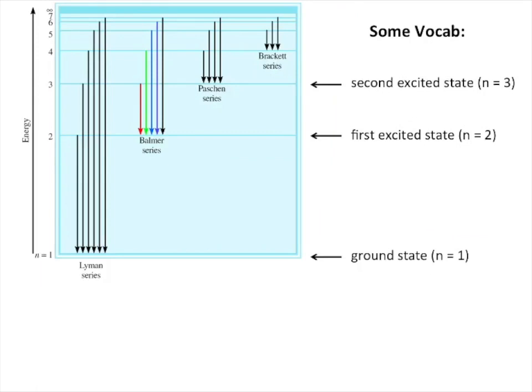Some vocab here is the ground state is called n equals 1. Ground means lowest energy that you can get. First excited state is an increase in energy. The electron in a hydrogen atom is not normally up there. It's normally in the ground state. So if you excite it with extra energy, eventually it's going to come back down. And then if you excite it up to the second excited state, which is n equals 3, then eventually it'll come back down too, either directly to n equals 1 or via the n equals 2 state.